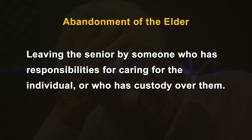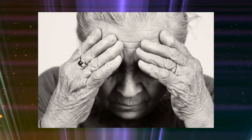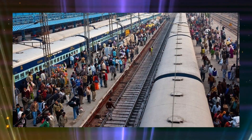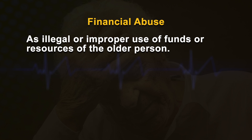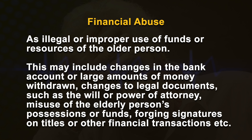Abandonment of an elder is an important form of elder abuse, defined as leaving the senior by someone who has responsibilities for caring for the individual or who has custody over them. Signs and symptoms include chronic depression, decreased self-esteem, feelings of loss of control, self-depreciation, isolation, and leaving the senior at public places like shopping malls or railway stations. Financial abuse is defined as illegal or improper use of funds or resources of the older person, including changes in bank accounts, large money withdrawals, changes to legal documents like wills or power of attorney, misuse of possessions, and forging signatures.